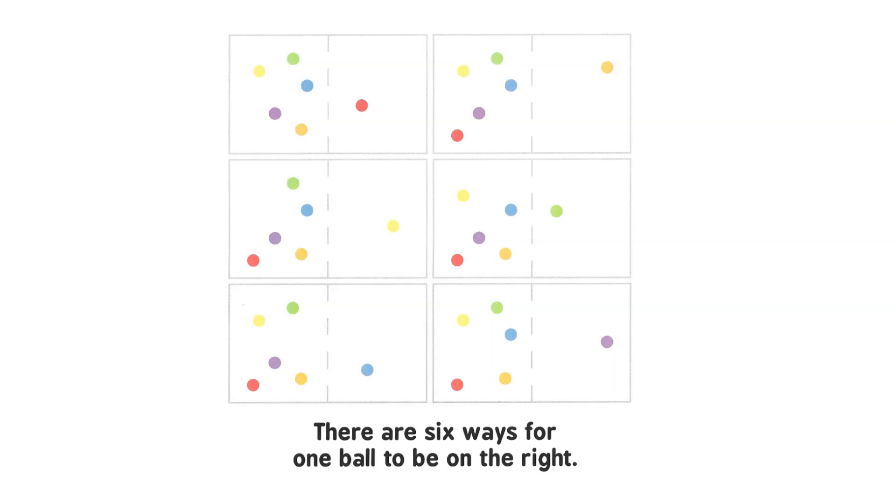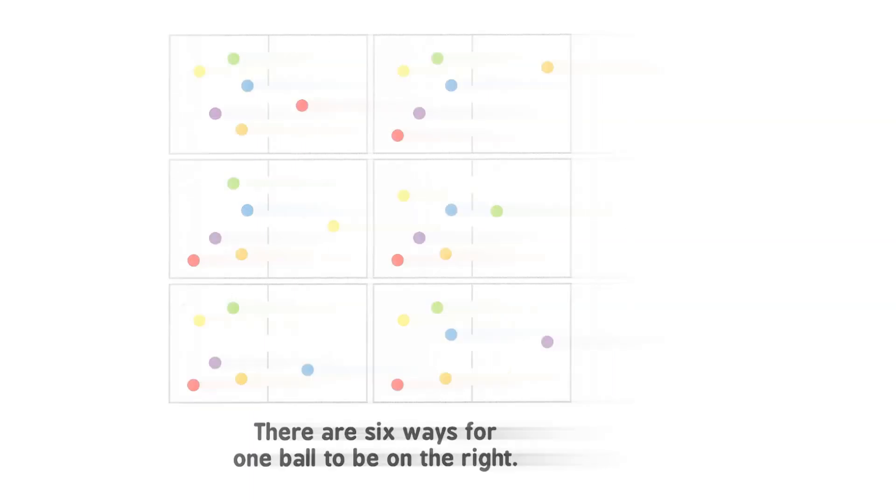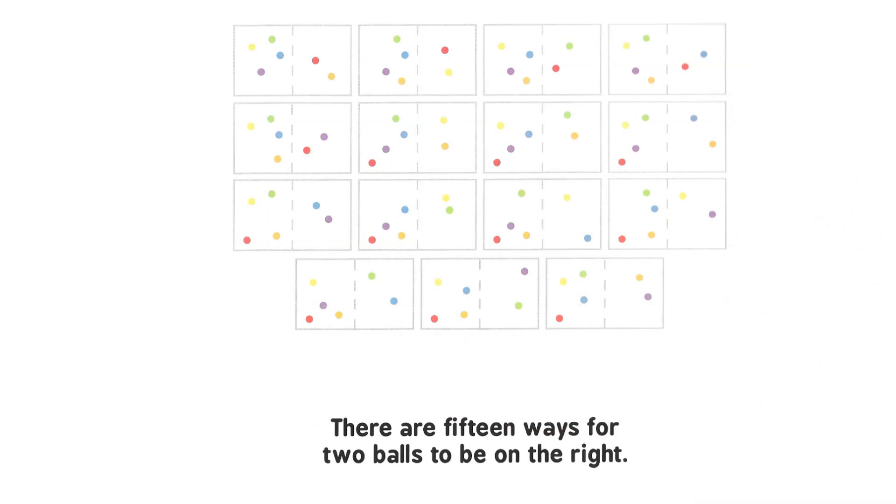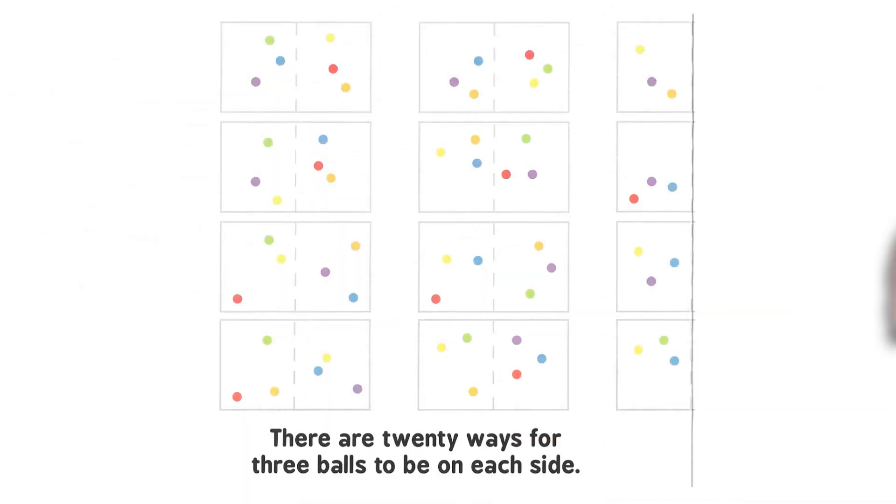There are six ways for one ball to be on the right. There are 15 ways for two balls to be on the right. There are 20 ways for three balls to be on each side.